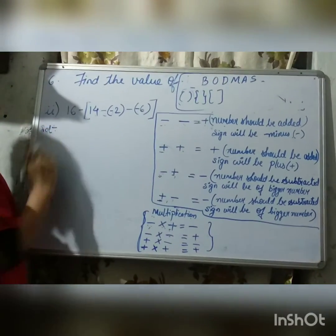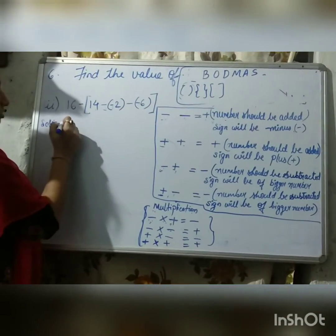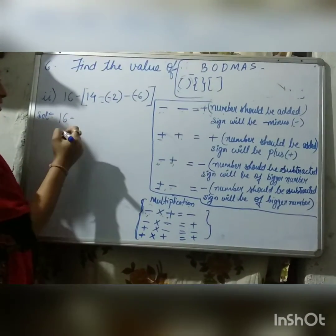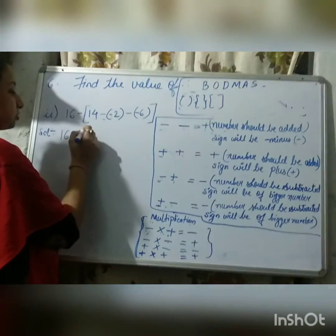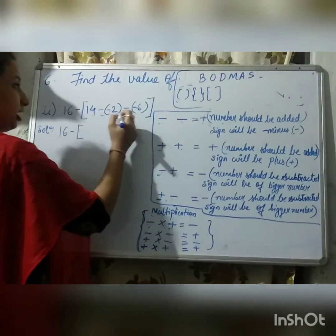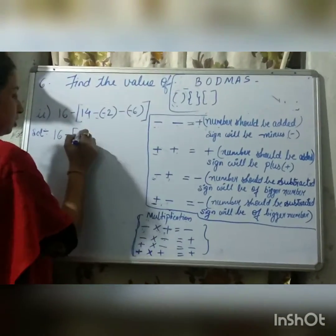Now, come to the second question. Here, we'll solve the brackets first. There are two brackets here. Inside the square bracket, we'll solve the common bracket first, according to the BODMAS rule.